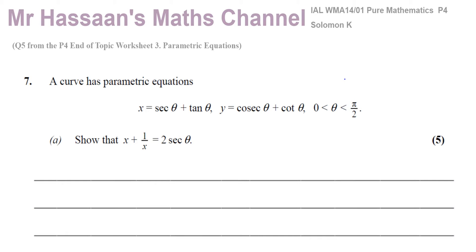A curve has parametric equations: x equals sec θ plus tan θ, y equals cosec θ plus cot θ, with θ between zero and π/2. We need to show that x plus one over x equals two sec θ. A question like this looks a bit complicated with all these trig functions, and we've got to show something like this.